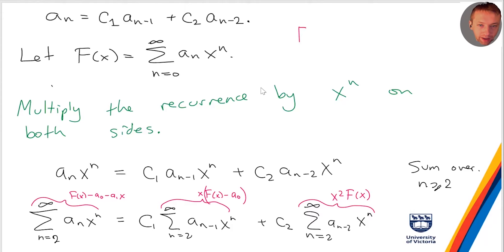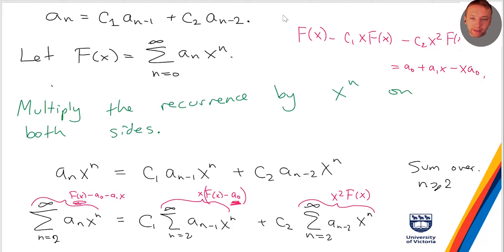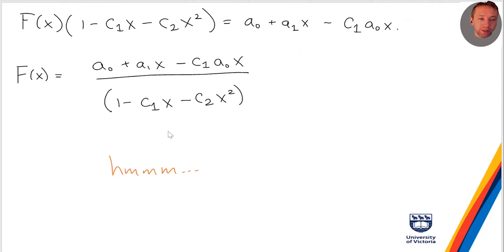On one side I get f(x) minus c1·x·f(x) minus c2·x²·f(x). That equals a_0 plus a_1·x, and the leftover term is minus c1·x·a_0, because there's a c1 here. Then I do the usual thing: factor out f(x) on the left side and divide by the leftover stuff.